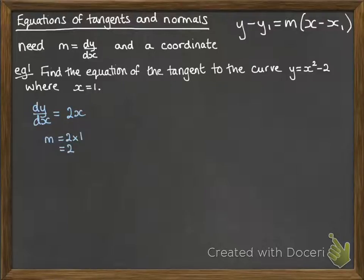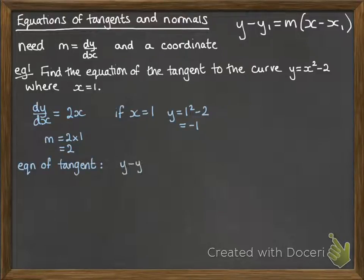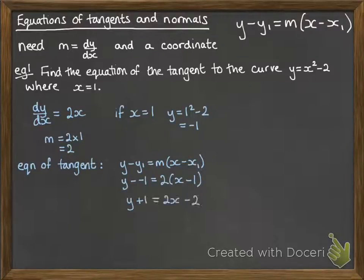When x is 1, m will be 2. And also, y would be minus 1. Now we have all the information that we need to put into our equation. We substitute in those coordinates and the gradient value, and then tidy things up.